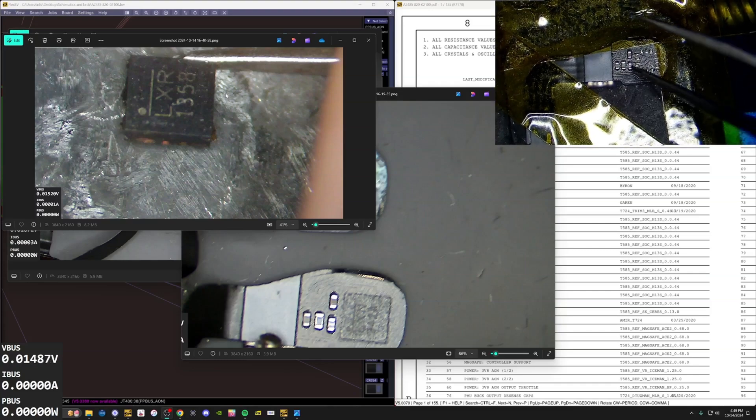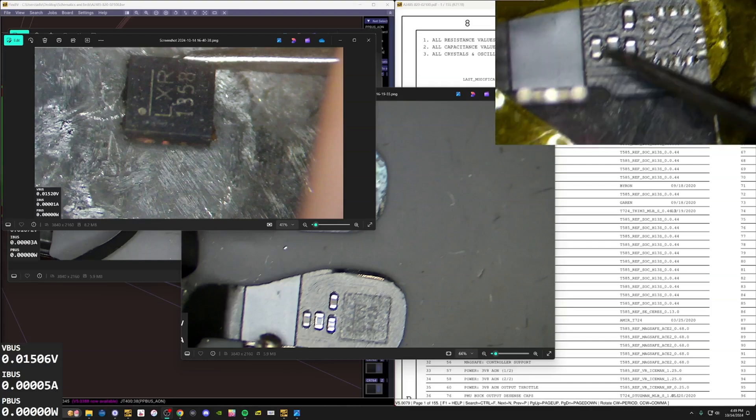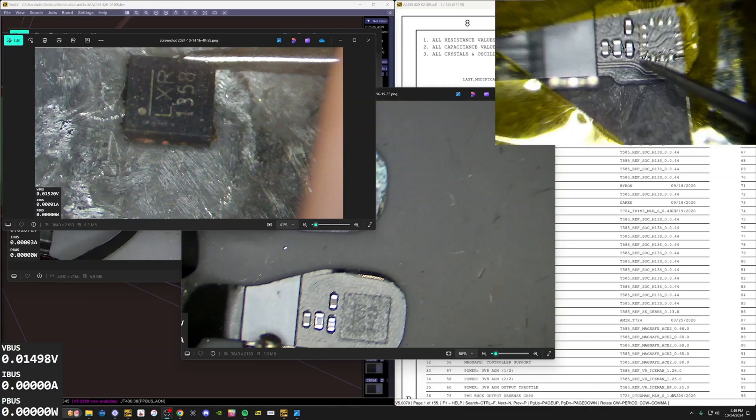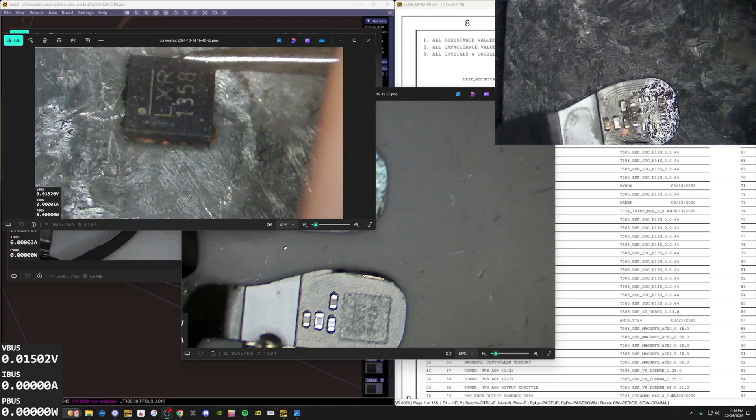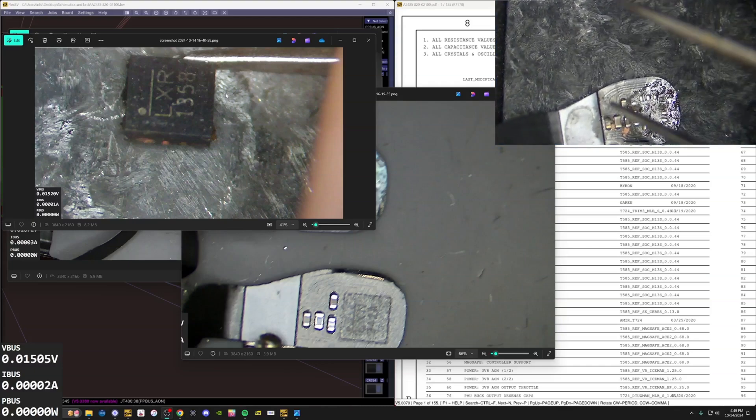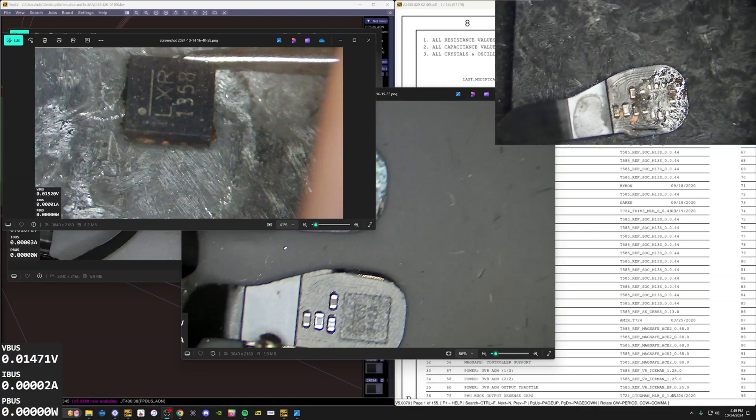It just kind of looks like a bunch of filtering caps. Maybe this is an inductor. It doesn't really matter. These look the same and all of the traces that we can kind of follow here look the same on the two flex cables.